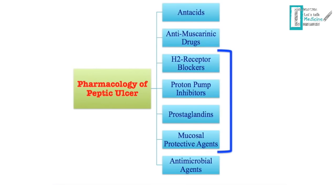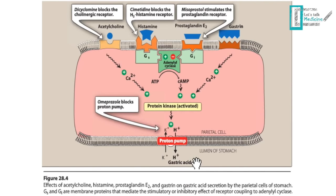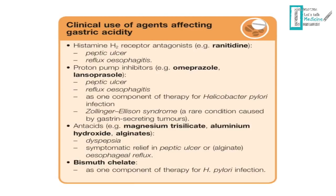This is a summary of what we have covered: antacids, anti-muscarinic agents, and hyposecretary drugs. It also summarizes the mechanism of action of PPIs, misoprostol, H2 receptor blockers, and anti-muscarinic drugs, as well as the clinical uses of H2 blockers, PPIs, antacids, and bismuth subsalicylate.